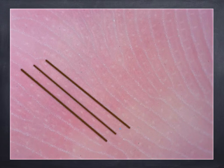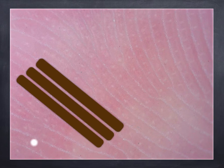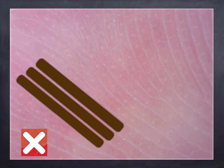Our traditional knowledge on dermoscopy of pigmented lesions on the acral skin suggests that when we see pigmentation located on the furrows of the acral skin, this pattern is associated with the diagnosis of nevus. In contrast, when we see pigmentation located on the ridges of the acral skin, this dermoscopic pattern is associated with the diagnosis of melanoma — this is the so-called parallel ridge pattern.